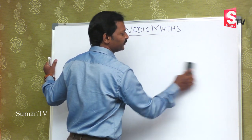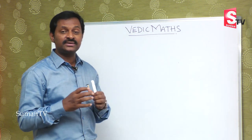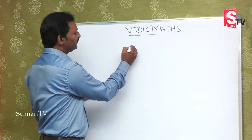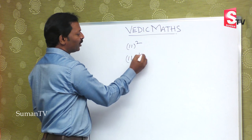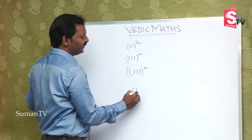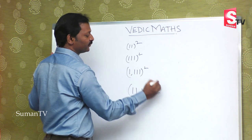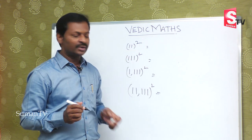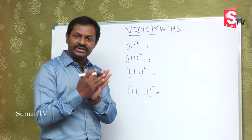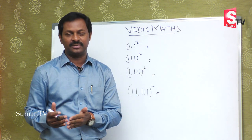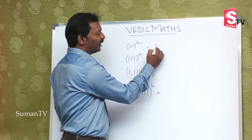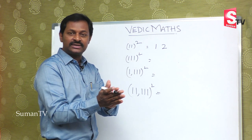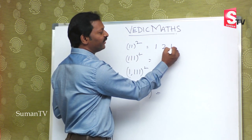In the previous chapters we discussed about squares. Now, squares of numbers made of all 1s follow a common method. If you take 11 squared, there are 2 digits. You write in ascending order then descending order. Starting with 1, go up to 2, then back to 1. So the answer is 121. For 111 squared, 3 digits: 1, 2, 3, then back 2, 1. The answer is 12321.